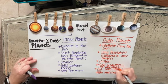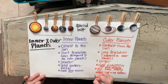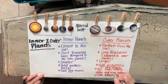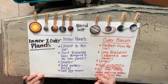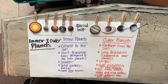The outer planets are gas giants with no solid surfaces. And because they're so far from the Sun, they're very cold — they have much colder surfaces than the inner planets.